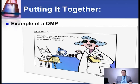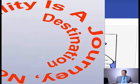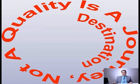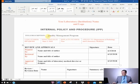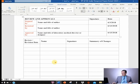I am going to give you an example of a QMPE. But before we do that, I need you to read this: it says 'Quality is a journey, not a destination.' This is an example of a quality management program that I have. As you can see here, this is a template where you put the number, effective dates, and everything — prepared by, reviewed by, and approved by.